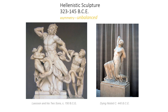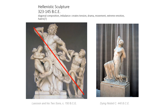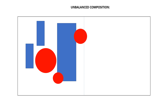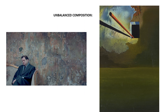Later in the Greek era, Hellenistic sculptures were created that showed an unbalanced pose. Typically these were very dramatic and included a sense of motion, and often were based on a diagonal line, which also adds to that sense of imbalance and tension. An unbalanced composition is one where the visual weight of one side is not balanced on the other side.